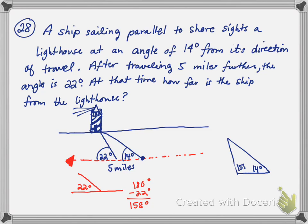So that's what that inner angle is, and I'm going to go ahead and draw that in. So I have 158 degrees, and I also know that this side down here is 5, because that's the distance it traveled from the first time that it saw the lighthouse to the second time it saw the lighthouse.